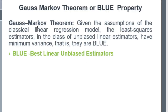Given the assumptions of the classical linear regression model, the least square estimators — beta1-hat and beta2-hat in the case of the simple linear regression model — in the class of unbiased and linear estimators, if they are linear and unbiased then they have minimum variance. This is termed as the Gauss-Markov theorem.